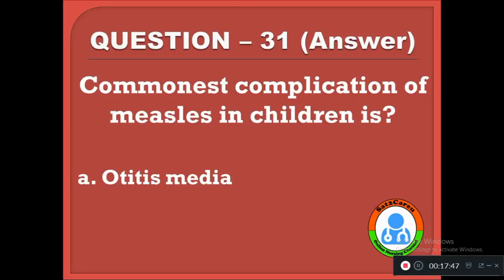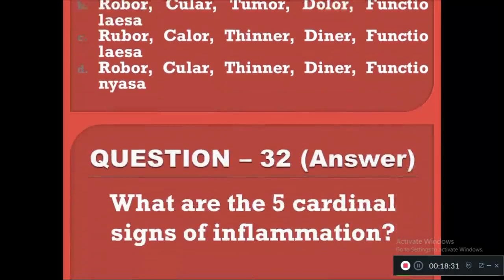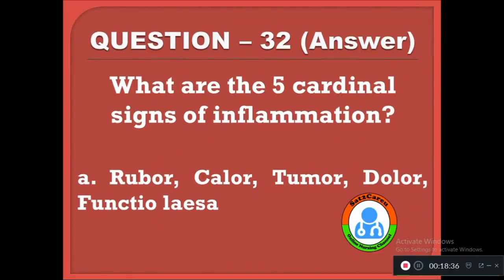Question 32: What are the five cardinal signs of inflammation? The correct answer is option A — rubor (redness), calor (heat), tumor (swelling), dolor (pain), and functio laesa (decreased functional activity). These five Latin terms describe the classic cardinal signs of inflammation.